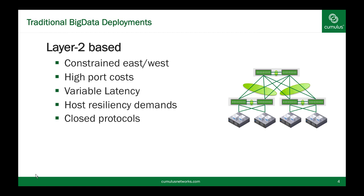The next area where Layer 2 networks can cause problems is variable latency. Related to the east-west bandwidth problem, latency can become variable as you are doing bulk transfers that turn on and off, and because there are so few paths inside of your network, it may result in blocking of traffic. This often means you have to resort to quality of service or other techniques to ensure that the jobs you're running are not being blocked by data transfers, which just results in more complexity inside of your environment.